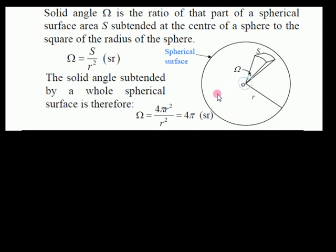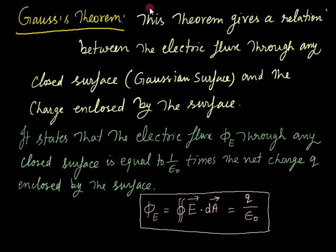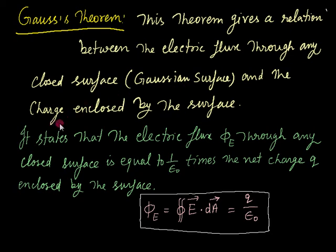Now the point about Gauss's theorem: this theorem gives a relation between the electric flux through any closed surface — known as the Gaussian surface — and the charge enclosed by the surface. The picture will be shown in the next slide.